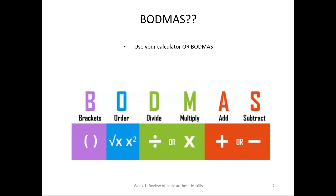Brackets, Order — which is another word for power — then Divide or Multiply, and you could do it the other way around. And then Addition and Subtraction, or you could do that the other way around. It stops this sort of thing happening.